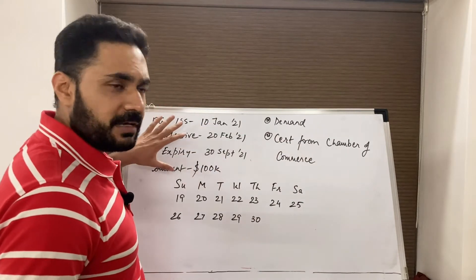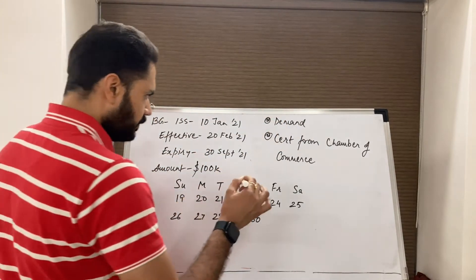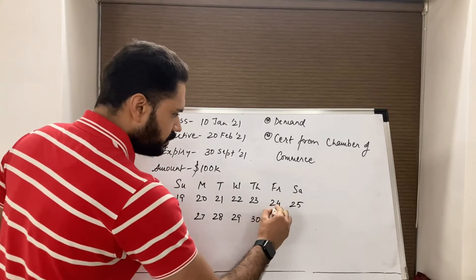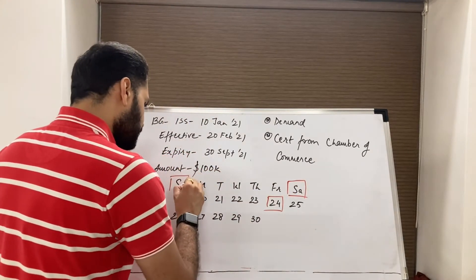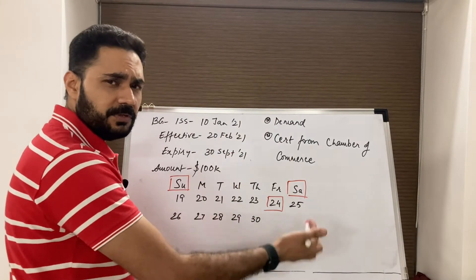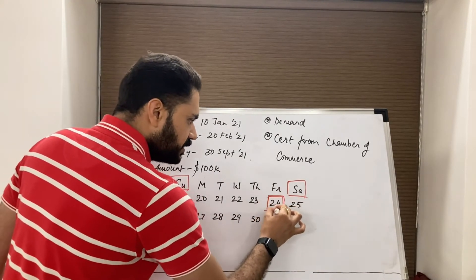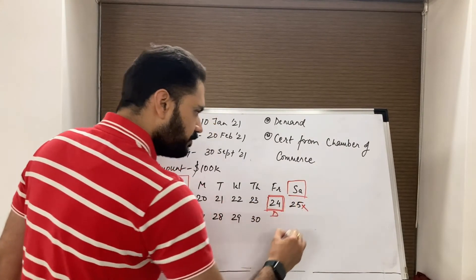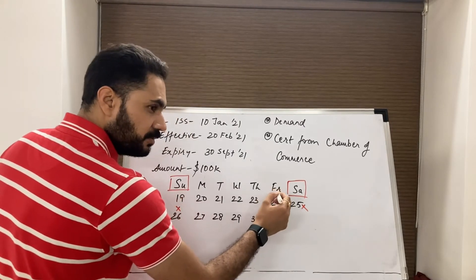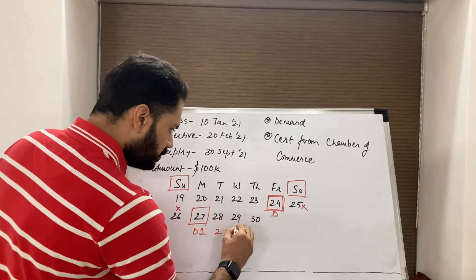Article 20 covers the time of examination. Using the same example — two documents are called for: one demand and one certificate from the Chamber of Commerce. Suppose the beneficiary presents a demand on Friday the 24th. Saturday and Sunday are non-business days in the country where the BG is issued. Excluding the 25th and 26th, the next business day from the date the demand is presented will be day one — so day one is Monday the 27th, followed by days two, three, four.